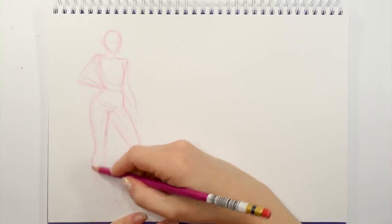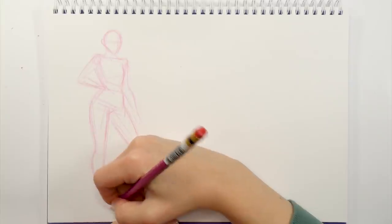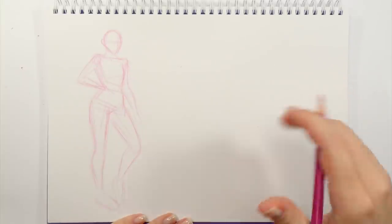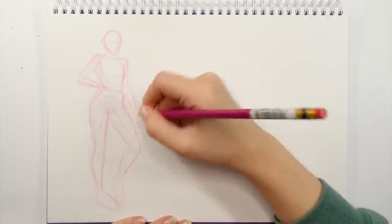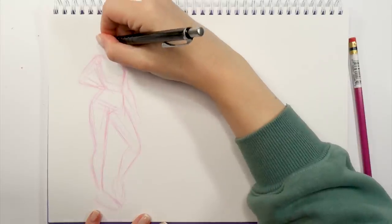Once I see that everything looks pretty okay, I'm moving on to adding the volume to my skeleton, let's say, my geometrical shapes, just to once more see whether everything is looking proportionate.